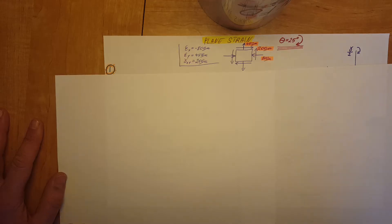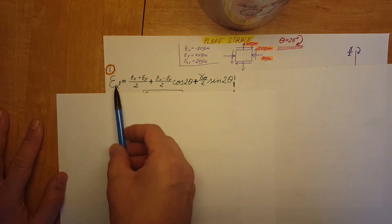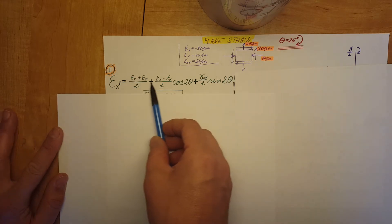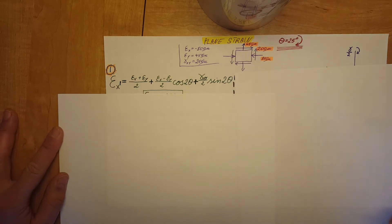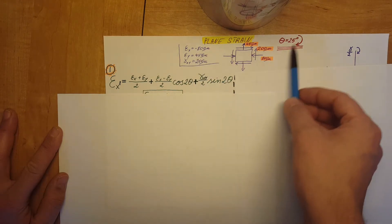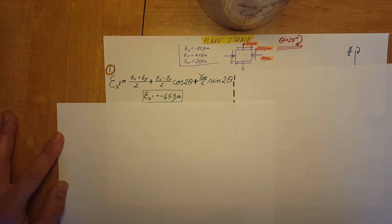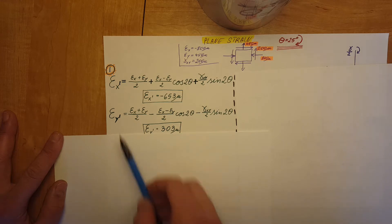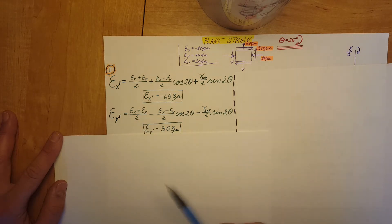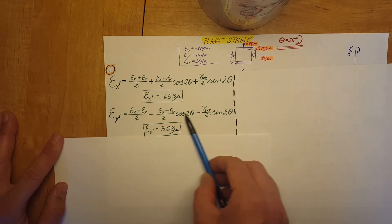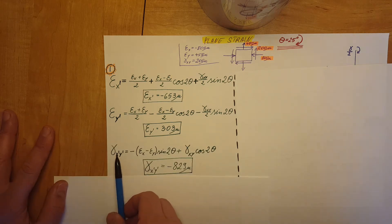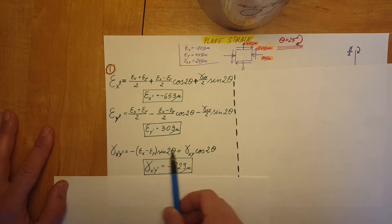First, let's calculate our normal strain in X after we rotate our state of stress. This is the formula — we simply plug in the given values and calculate our strain. We do the same for normal strain in Y prime in the new orientation, and the same for shearing strain in the new orientation.